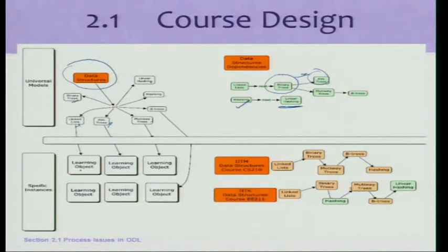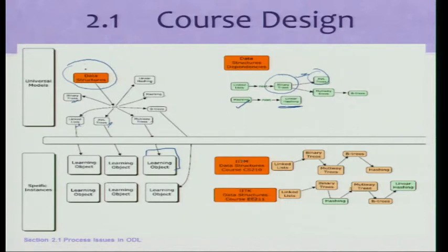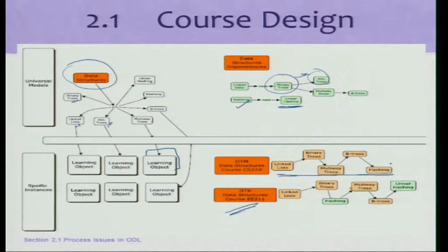For each one of these topics you can have a learning object — you can have multiple learning objects. Essentially a learning object is an explanation of what the topic is. So if there is a course offered by, say, IITM on data structures, they will pick up a set of topics listed here and say this is our data structures offering. Another institute may pick up a different subset of topics. These two offerings may be different from each other, but both confirm to this dependency.